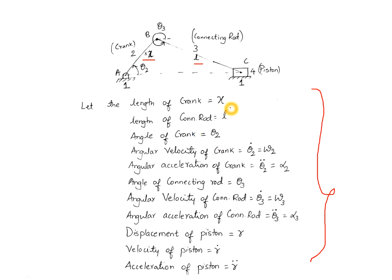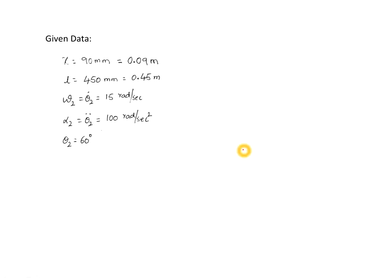To summarize the given data: crank length x equals 0.09 meters, connecting rod length L equals 0.45 meters, angular velocity of the crank omega 2 equals 15 radian per second, angular acceleration of the crank alpha 2 equals 100 radian per second squared, and angular position of the crank theta 2 equals 60 degrees. If angular acceleration is not defined, take it as zero.